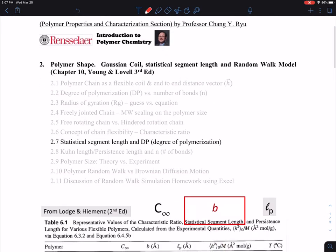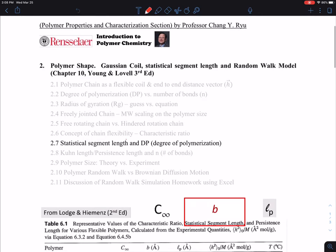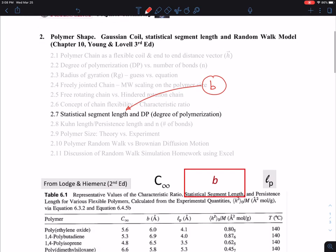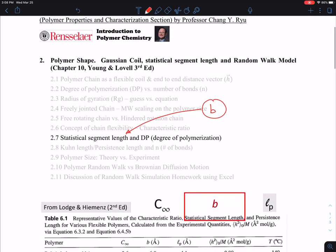Okay, so let's talk about the statistical segment length and the degree of polymerization. Statistical segment length is actually very well used, and there are different notations. Here, I'm going to use a symbol b, which is shown in the bottom as well.